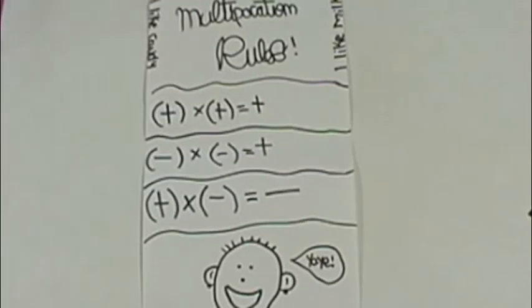As this chart for multiplying rational numbers shows, a positive times a positive equals positive, a negative times a negative equals positive, and a positive times a negative equals negative.